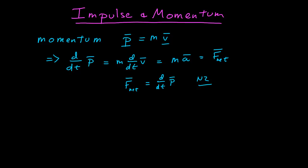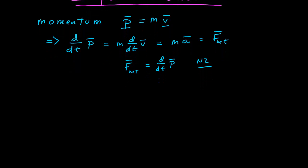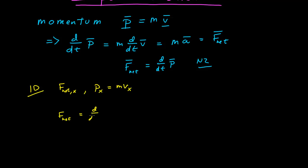Let's take a look at what this means. Instead of working in vectors, let's go back to 1D. Our net force is now the x-component of the net force, and we're going to look at the x-component of the momentum, which is the mass times the x-component of the velocity. Now if we do this derivative, we have the net force equal to the time derivative of the momentum, which could be a function of time because it's related to the velocity.